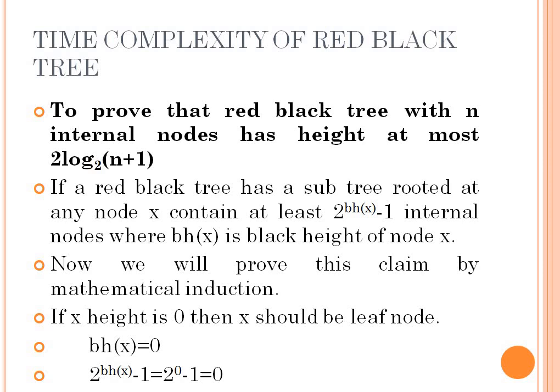To prove that a red-black tree with n internal nodes has height at most 2 log base 2 of (n+1): if a red-black tree has a subtree rooted at any node x, it contains at least 2^bh(x) minus 1 internal nodes, where bh(x) is the black height of node x.